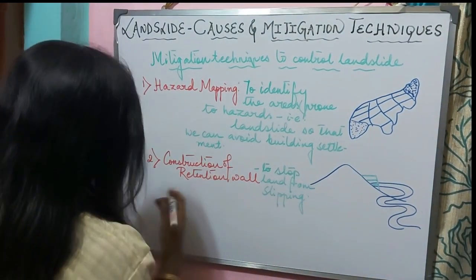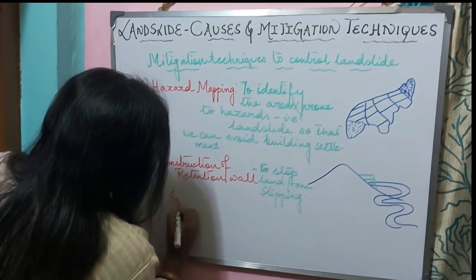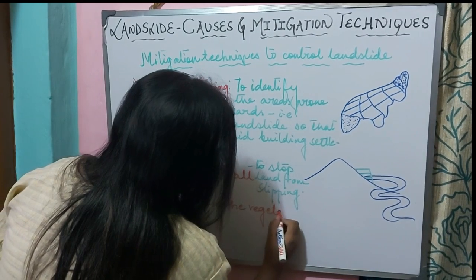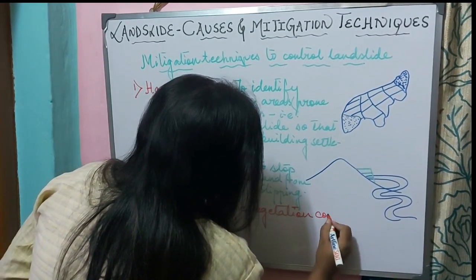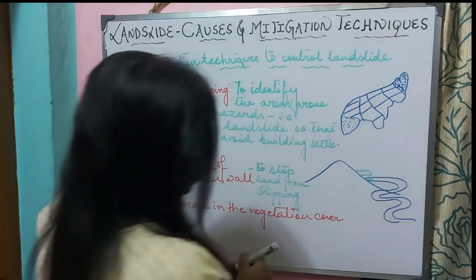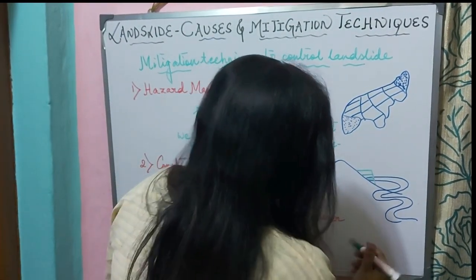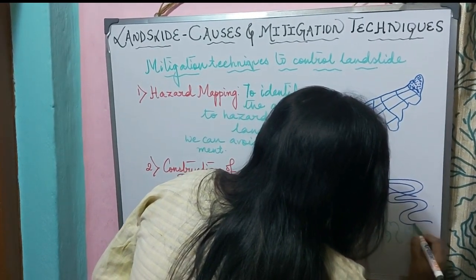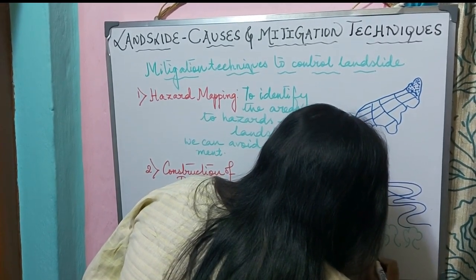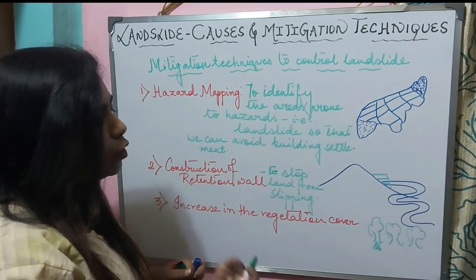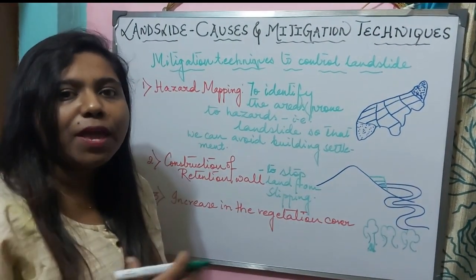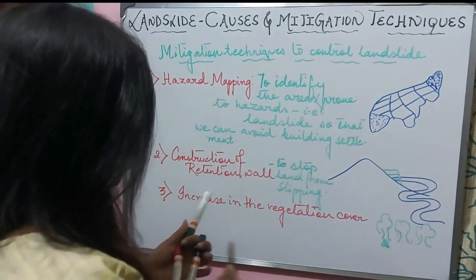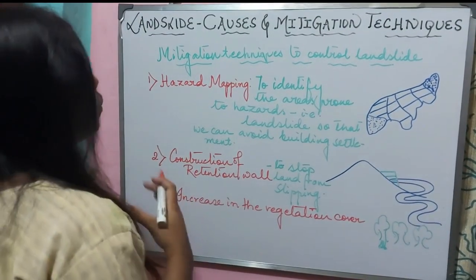The next mitigation technique is increasing vegetation cover. If there is more vegetation cover, the roots will be able to hold the soil. As the roots hold the soil, there will be less sliding of the soil. So to arrest landslide, we need to increase the vegetation cover.